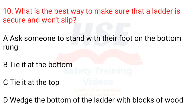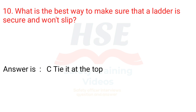Question 10: What is the best way to make sure that a ladder is secure and won't slip? A. Ask someone to stand with their foot on the bottom rung. B. Tie it at the bottom. C. Tie it at the top. D. Wedge the bottom of the ladder with blocks of wood. Answer is C. Tie it at the top.